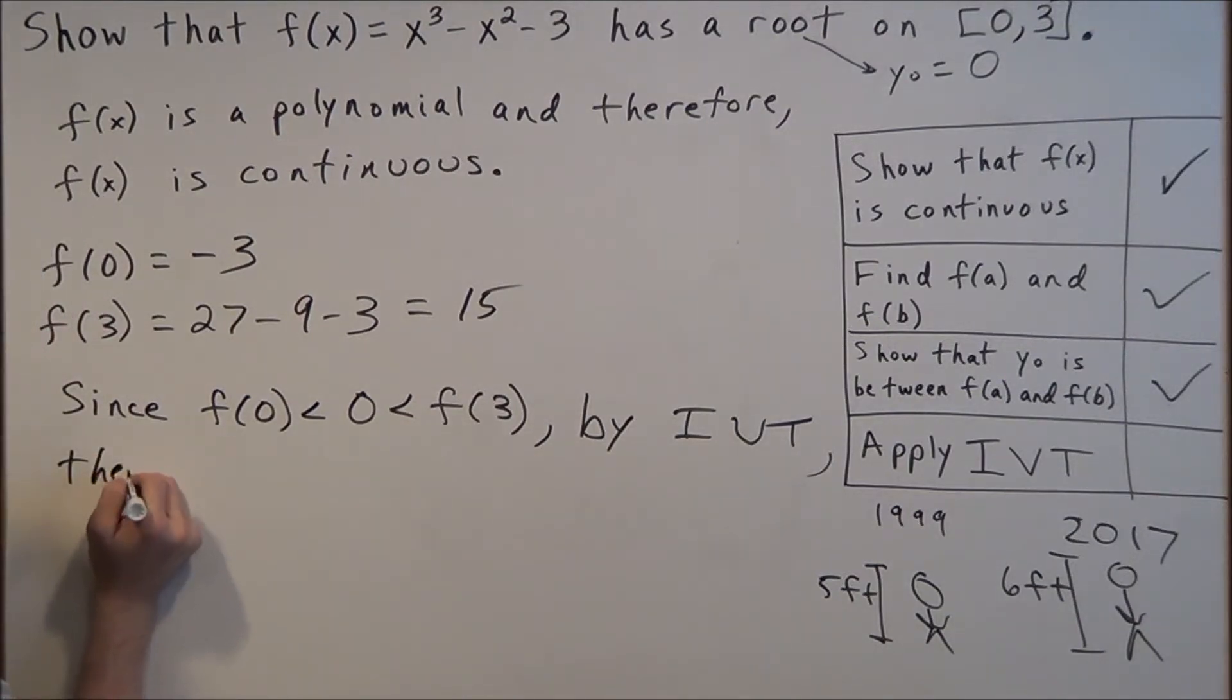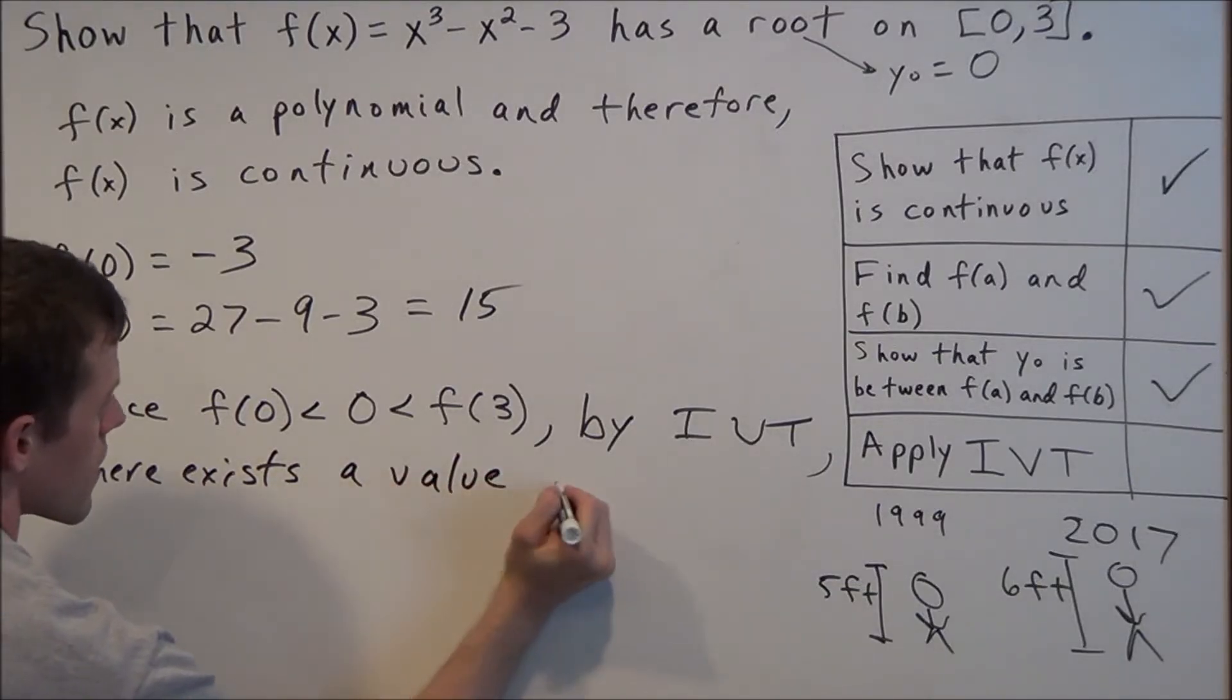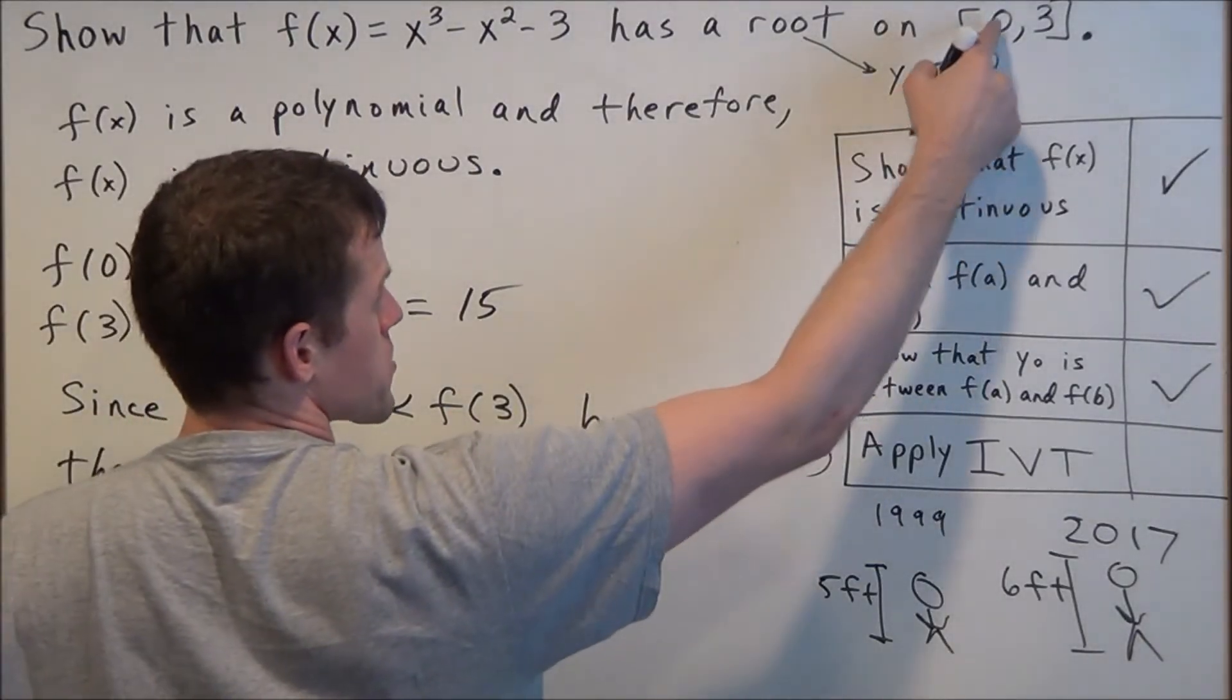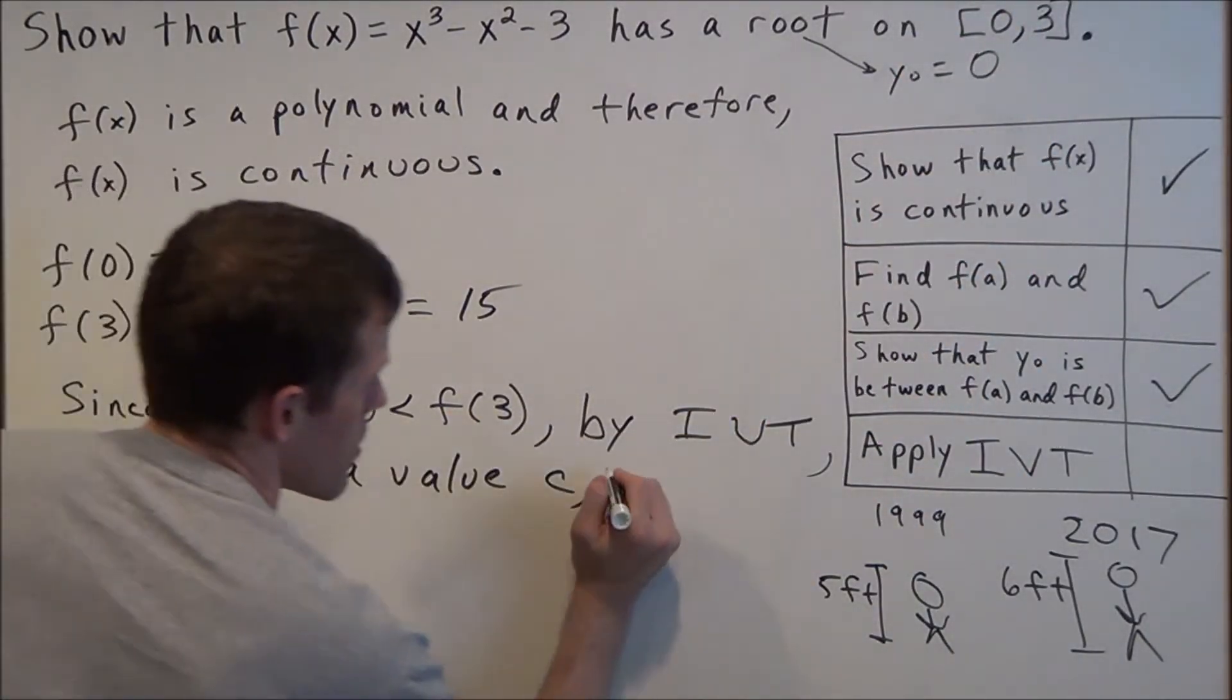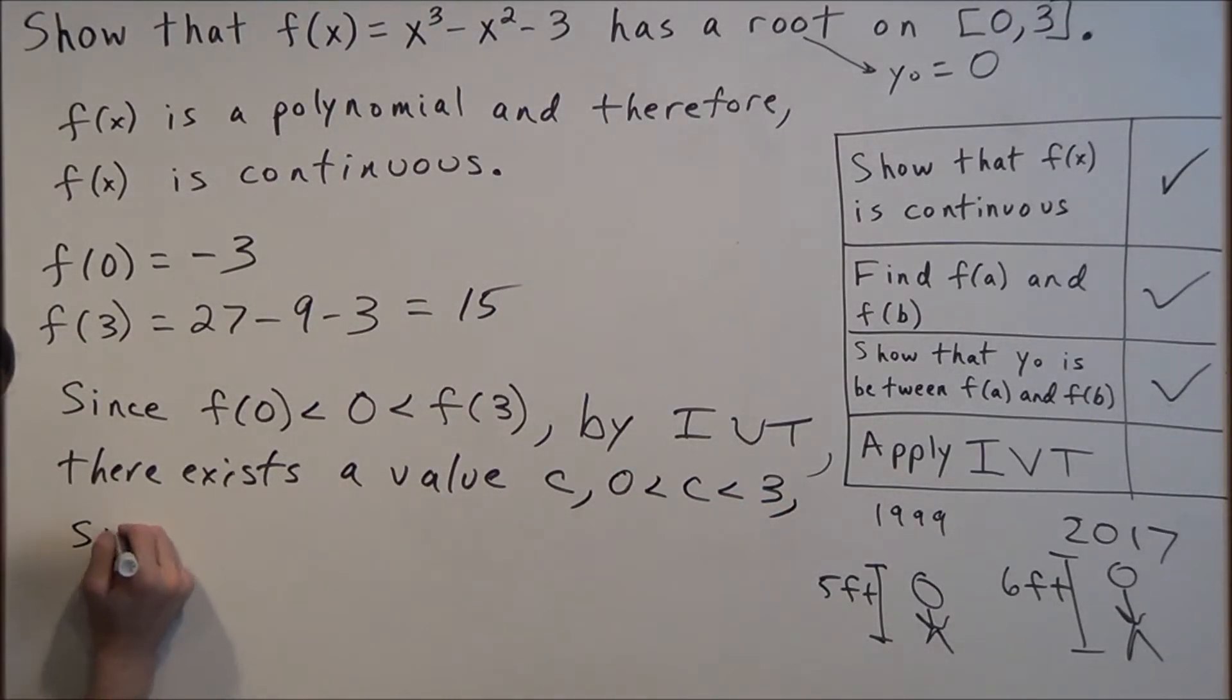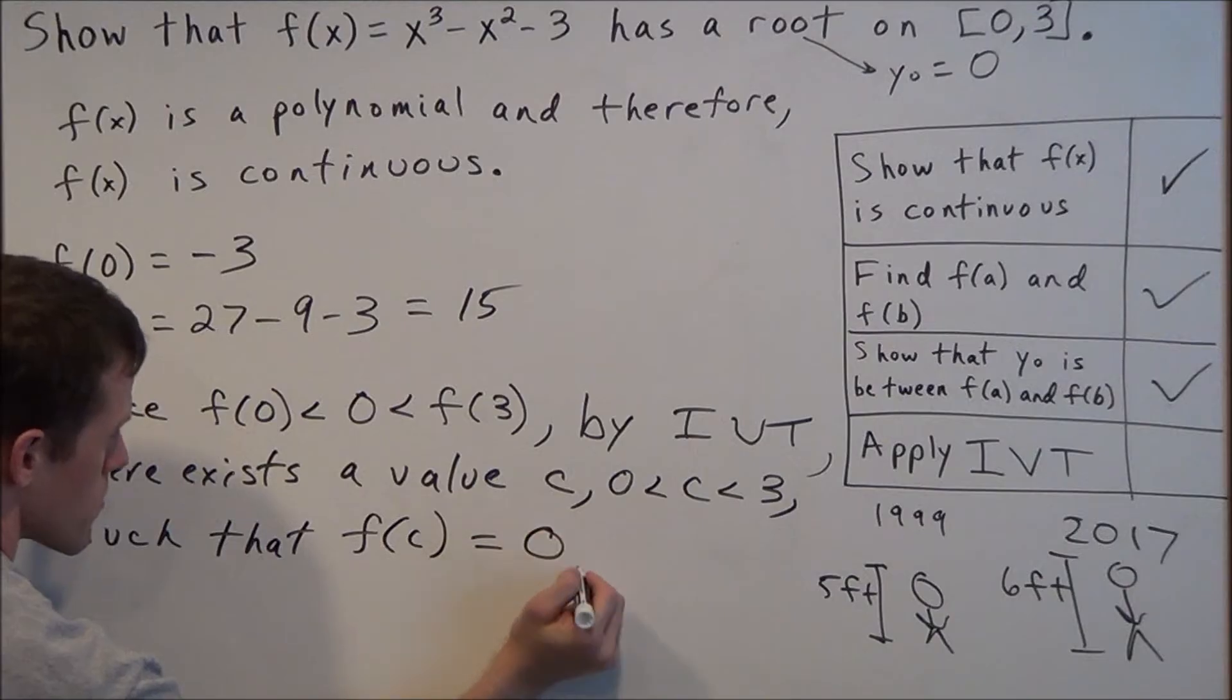there exists a value c, and remember, because of the Intermediate Value Theorem, we can guarantee that c is between 0 and 3, such that the function value at c equals 0. Now, just for conceptual insight, think about what we just found here.